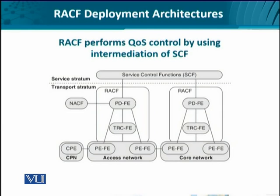Let's look at the scenario where the resource and admission control function is performed by the intermediation of the service control function. Here we see we have the service stratum including the SCF shown here. At the transport stratum we have the RACF. The RACFs of the core and access networks are talking to each other via SCF, meaning QoS control is actually being dictated through the involvement of the SCF.